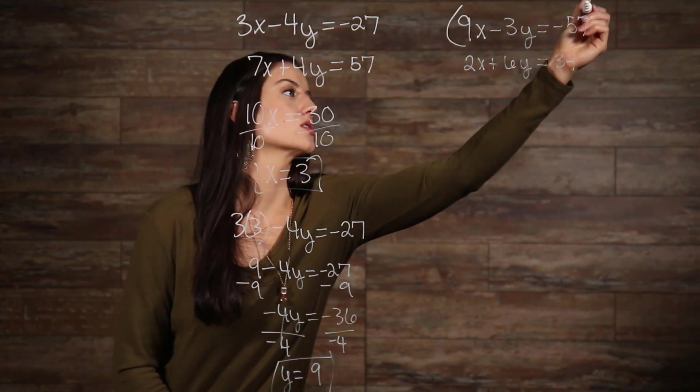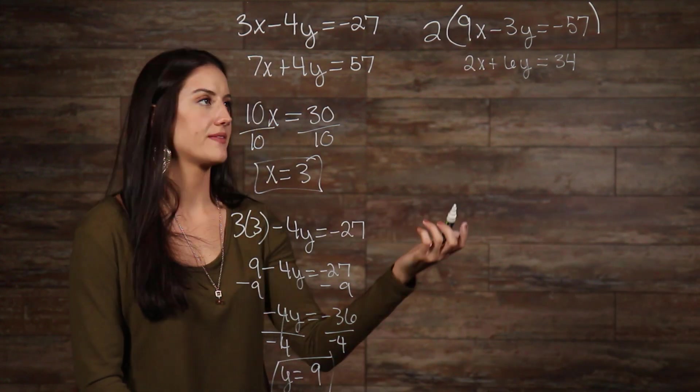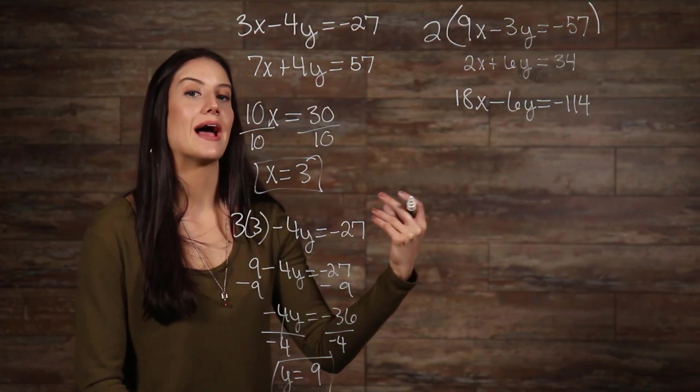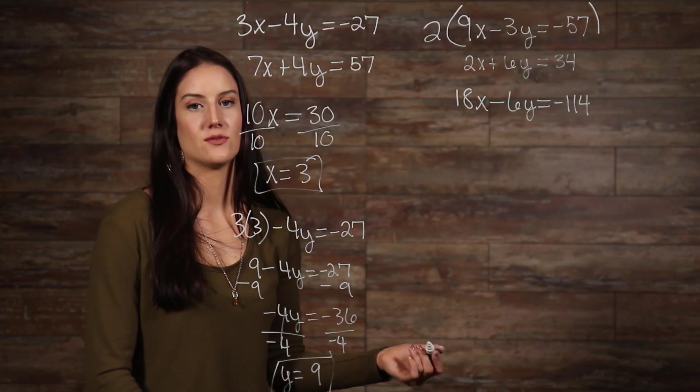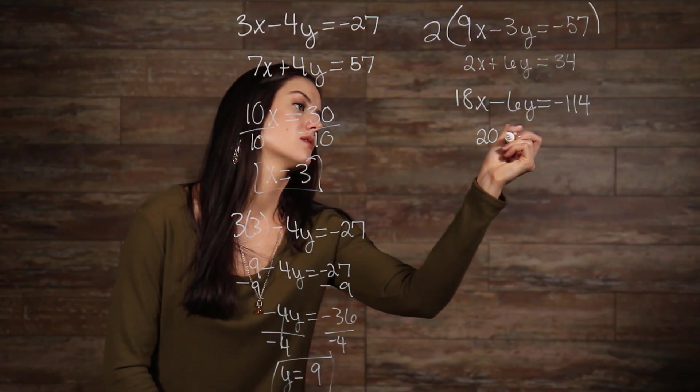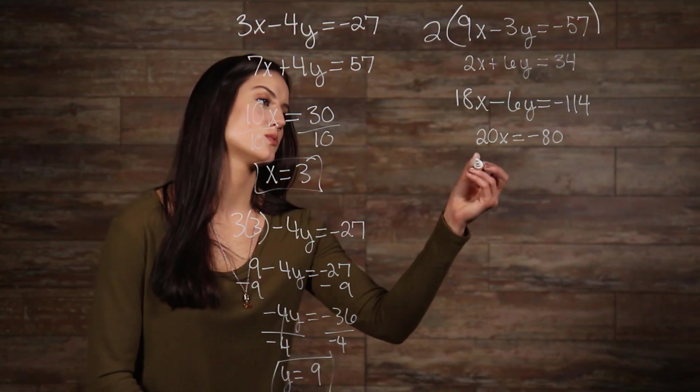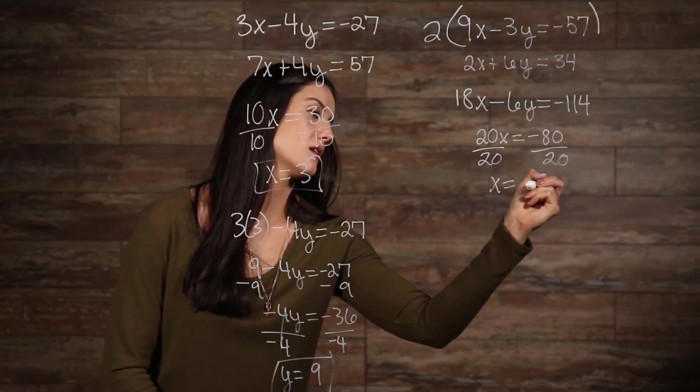Now, we need to take this and add it to our other equations so we can get our y's to cancel out. Now, we need to divide both of our sides by 20, which gives us negative 4.